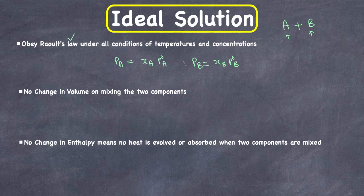Next, there is no change in volume on mixing the two components. In ideal solutions, the volume of the solution is the sum of the volumes of the components before mixing. Let's say VA is the volume of component A and VB is the volume of component B before mixing. This is the total volume before mixing, and it equals the volume of the solution after mixing. So Delta V, which represents the change in volume after mixing, equals zero.